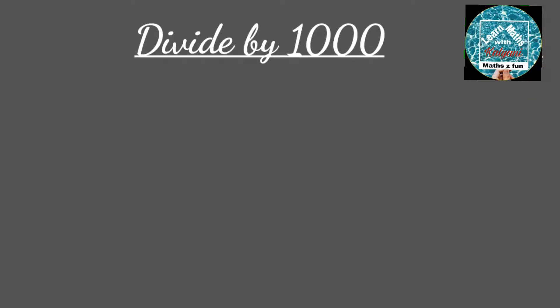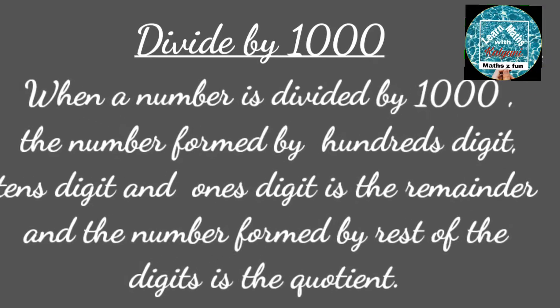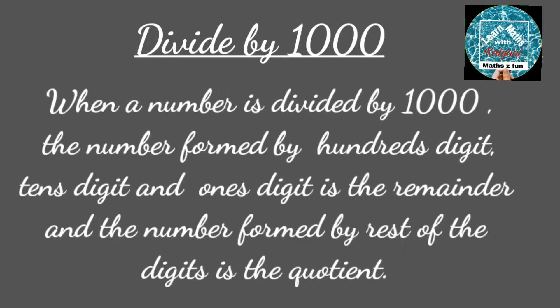When a number is divided by 1000, the number formed by the 100's digit, 10's digit, and 1's digit is the remainder and the number formed by the rest of the digits is the quotient.